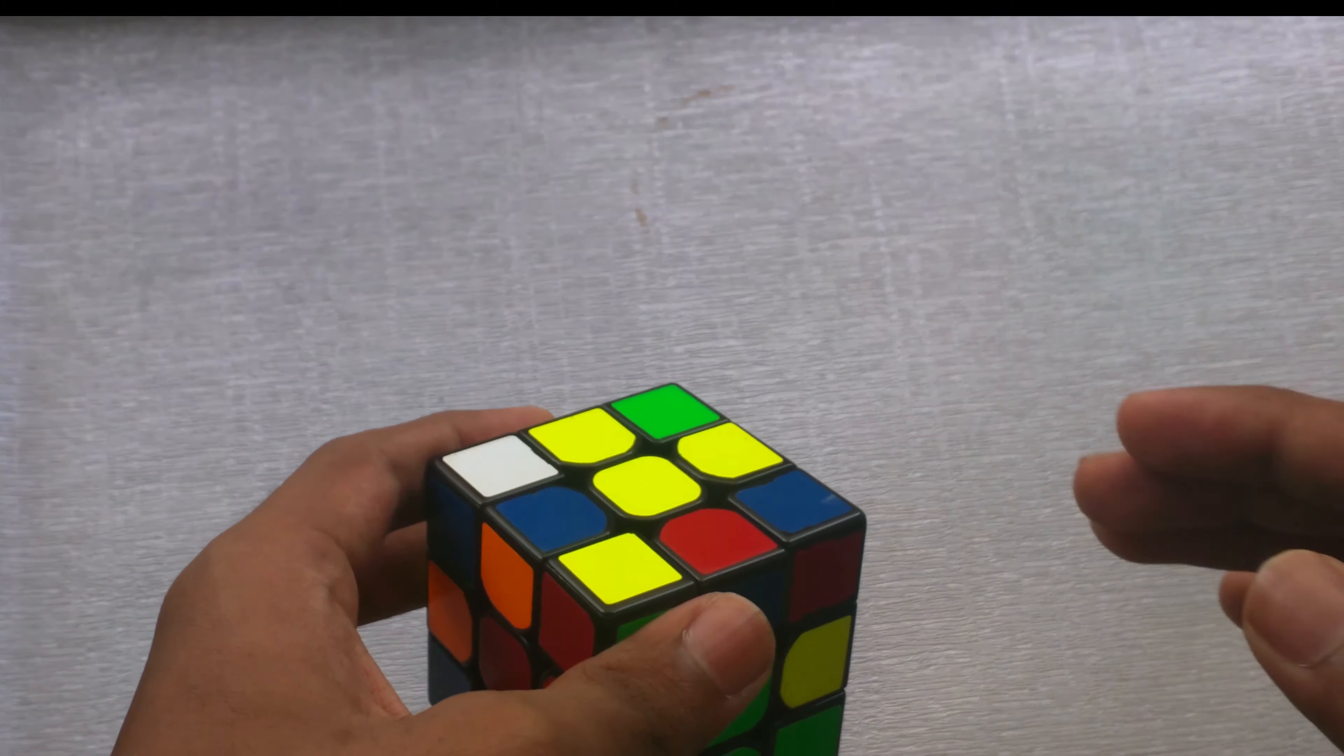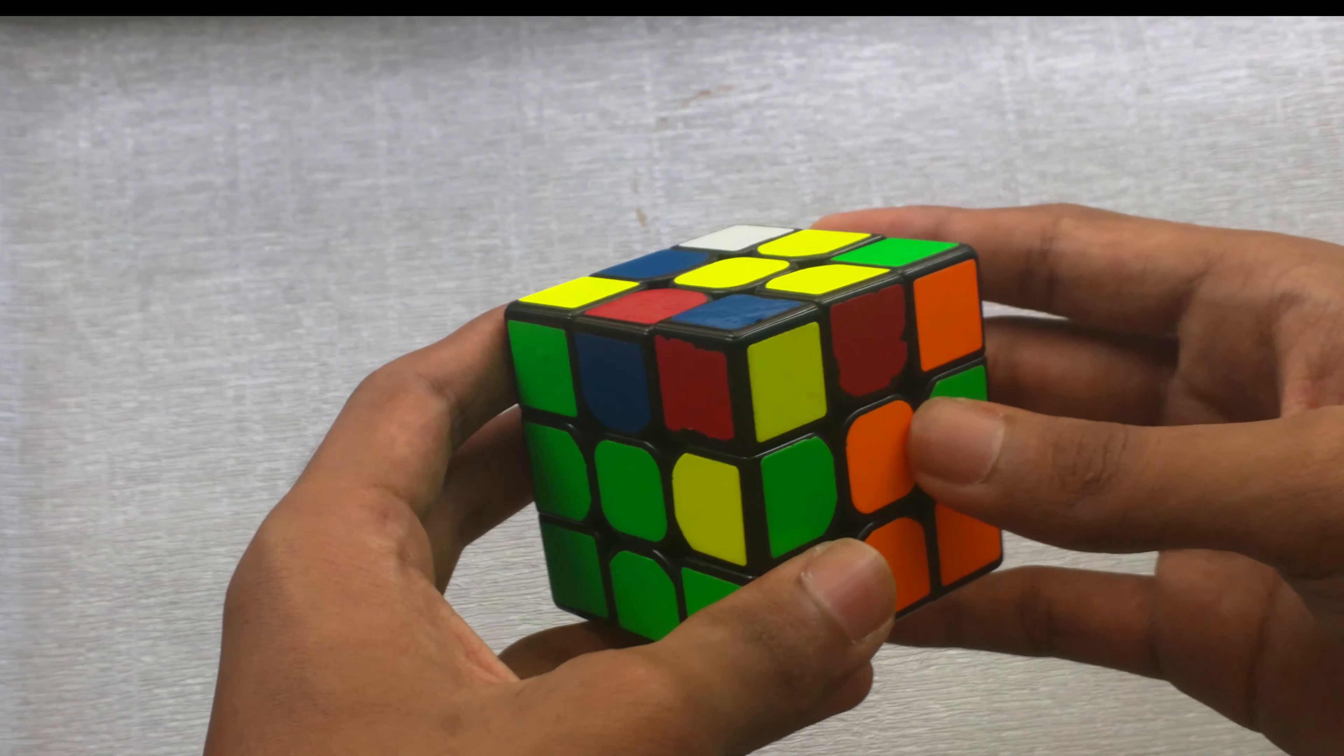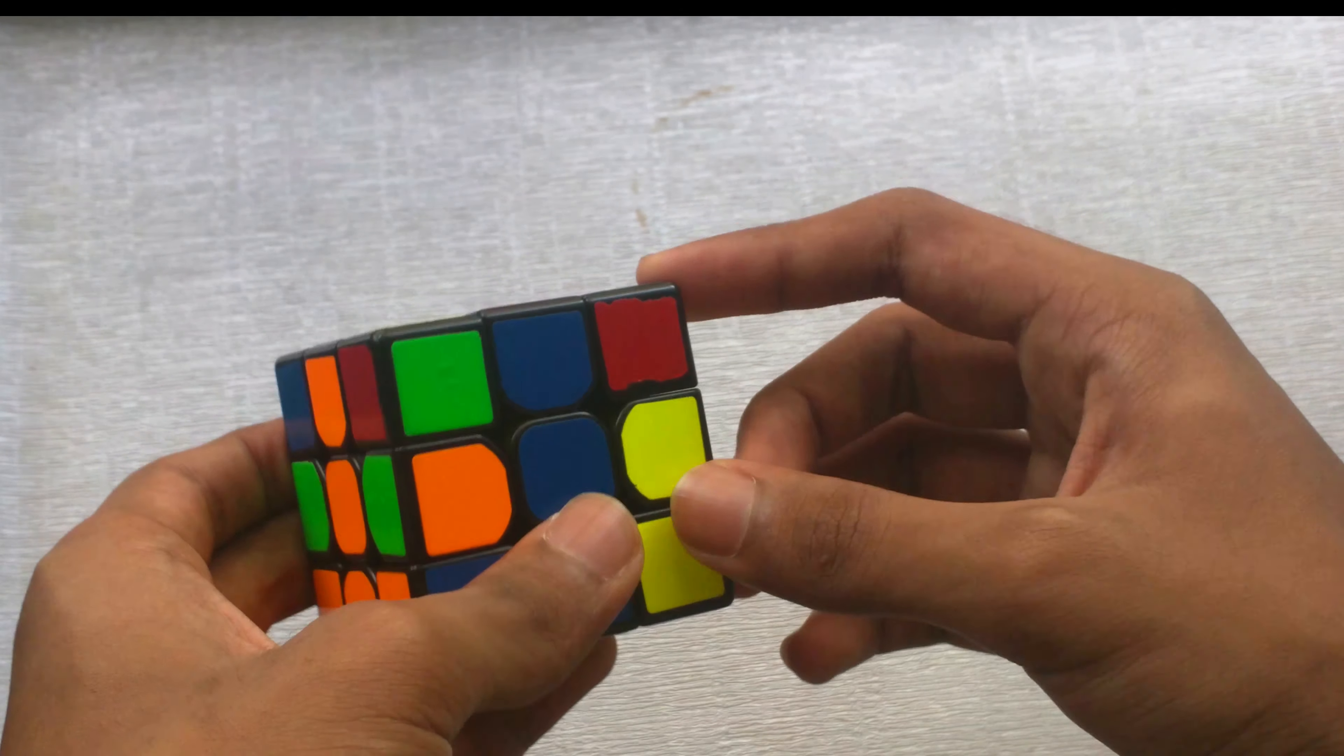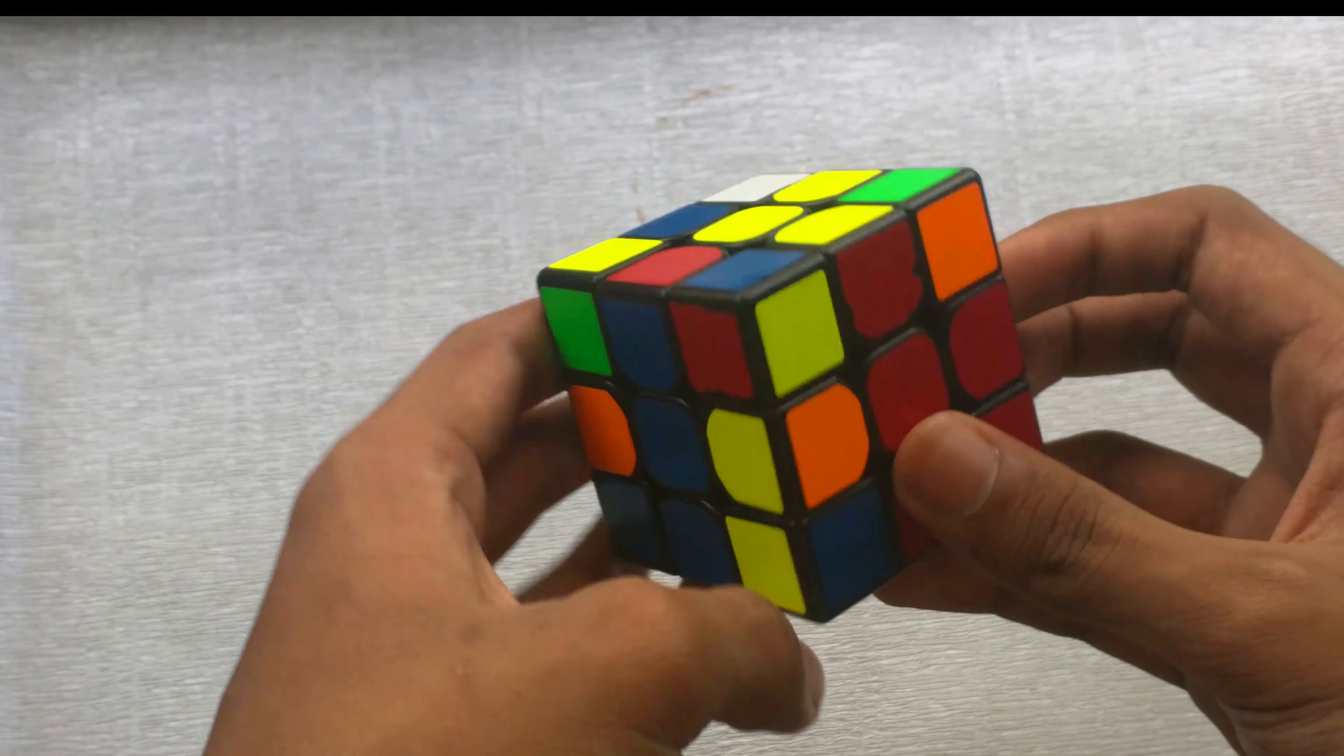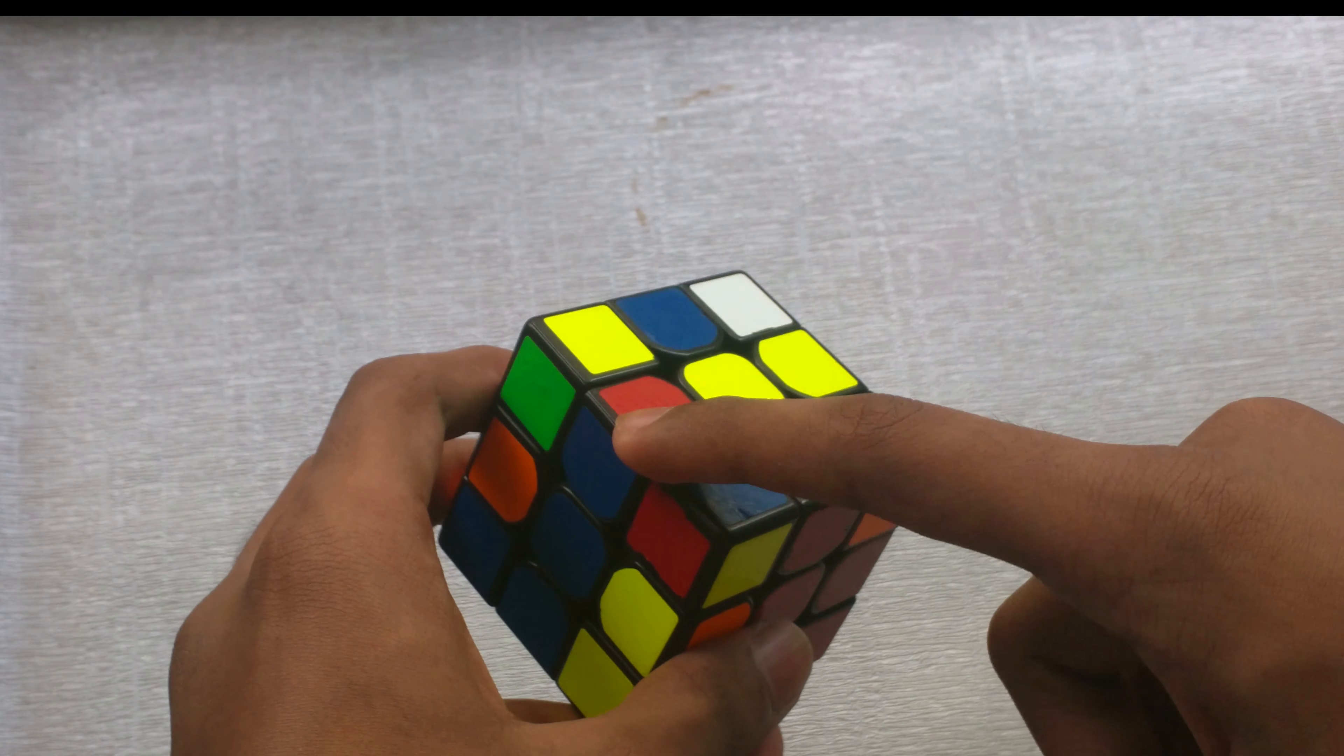If the white is on top, specifically. So once you look at the edge, you want to move the edge so that it matches with the center, like this. Then you want to find which color it has on top. In this case, it's red, and the red center is over here.